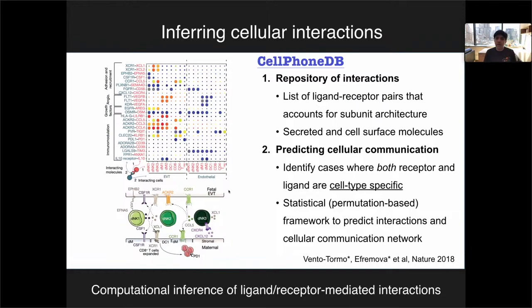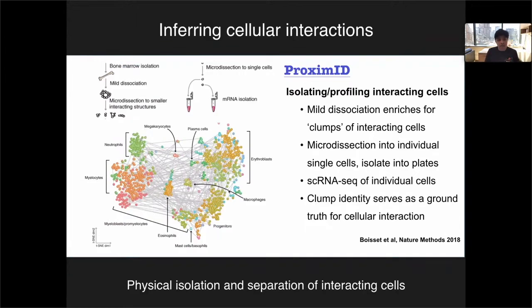Our next experimental highlight addresses a longstanding challenge: being able to identify cells that physically interact with each other. For historical context, in 2018 Rosa Ventotormo and Sarah Teichman released CellPhoneDB, presenting the idea that by looking at the level of a ligand and receptor that two different cells expressed, you could infer that they interacted. These tools have been used by many labs to generate hypotheses, but there's no ground truth — just because cells possess the machinery to interact doesn't necessarily mean that they do. Alex van Neutendarten's group also released Proxim-ID, which uses mild tissue dissociation to create small clumps of interacting cells, then fully dissociates them for single-cell RNA-seq — a beautiful idea, but very challenging to do at scale.